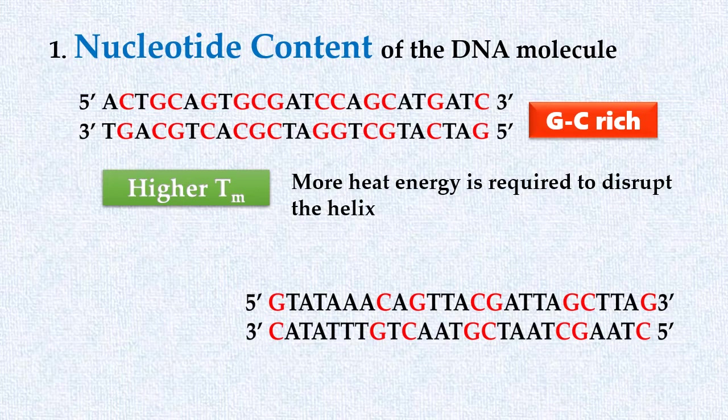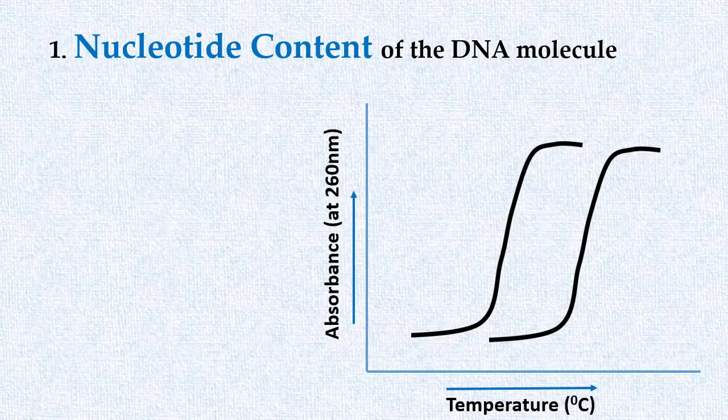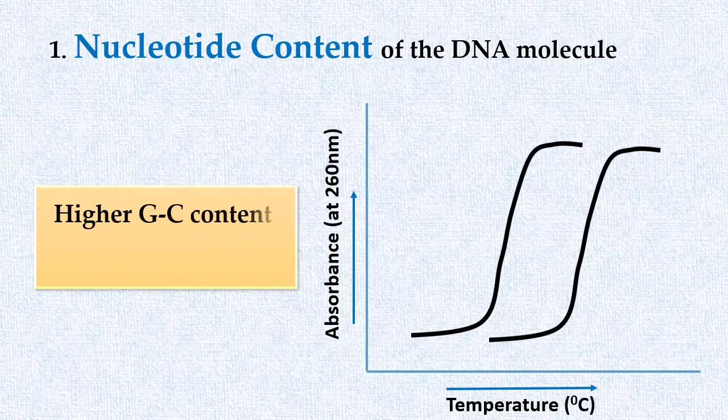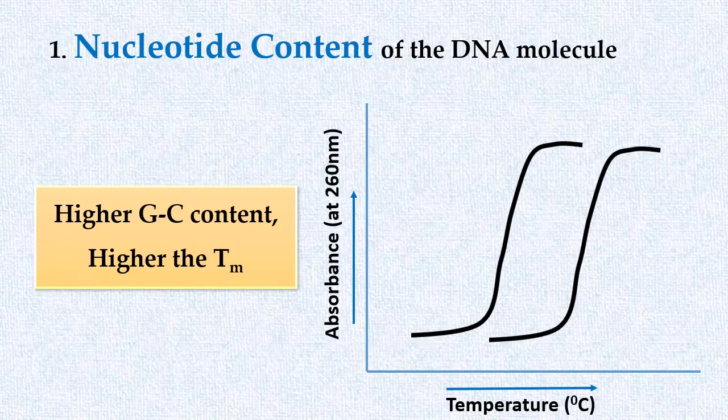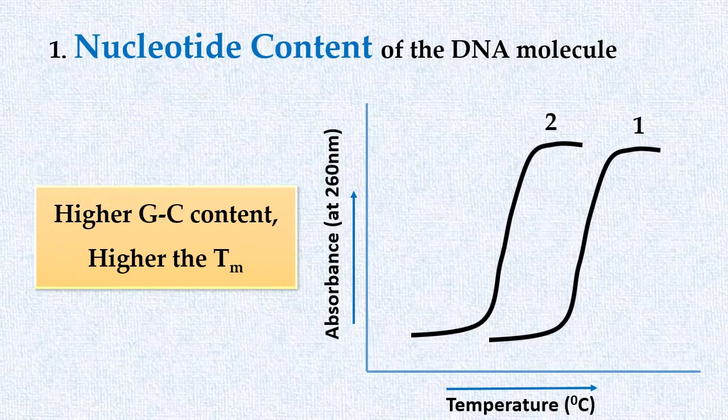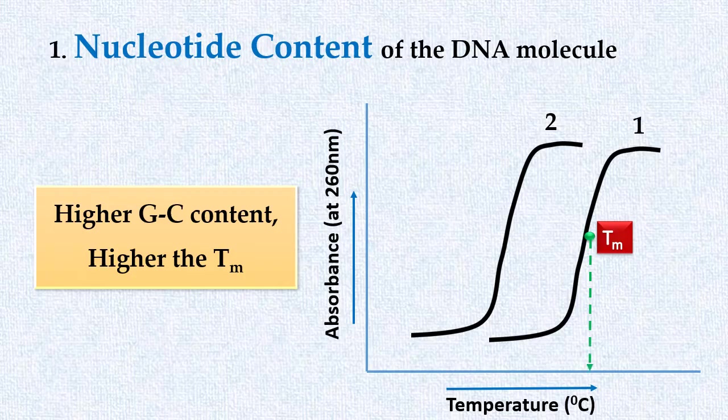This can also be shown graphically. Here you can see two melting curves. As we said, higher the GC content of DNA, higher will be the melting temperature. So this curve is of the first DNA sequence which is GC-rich, and this one is of the second DNA sequence. Melting temperature of first DNA sequence is higher than the second DNA sequence.